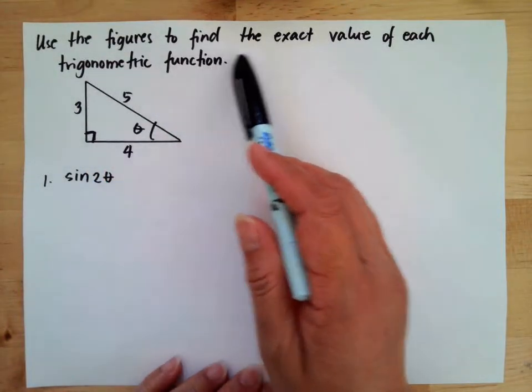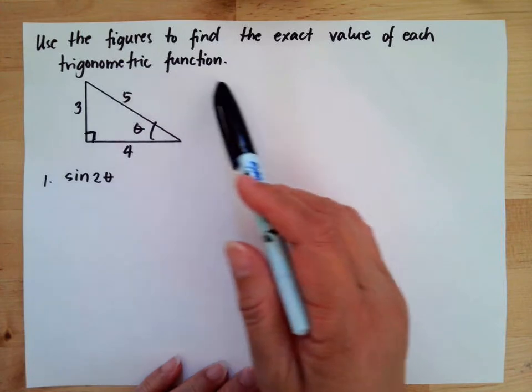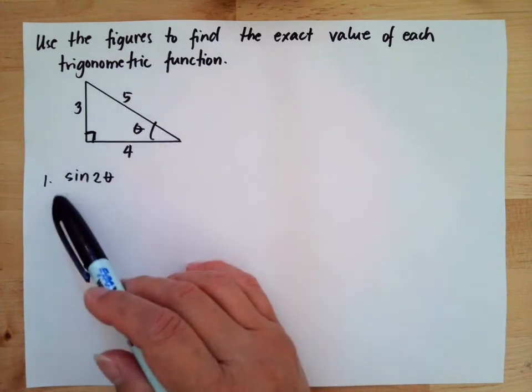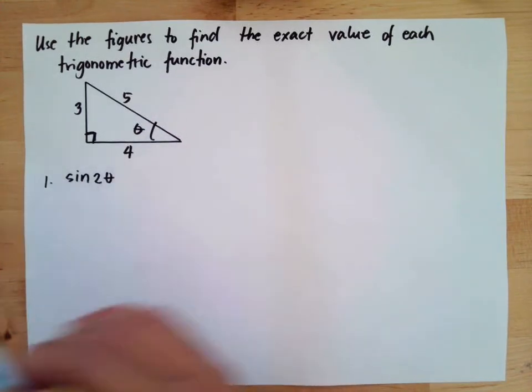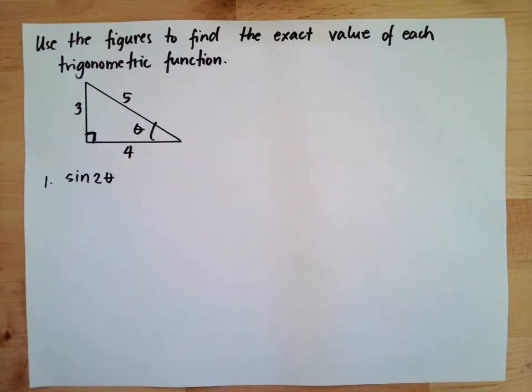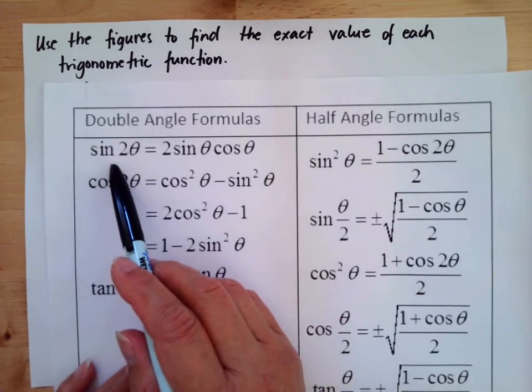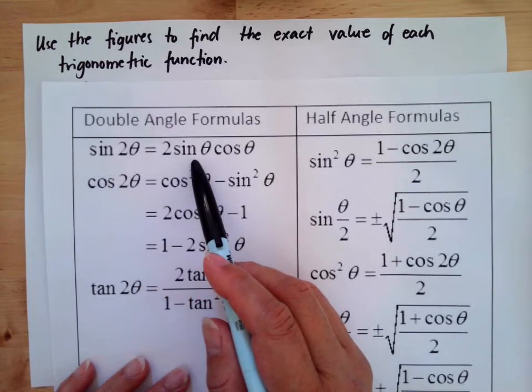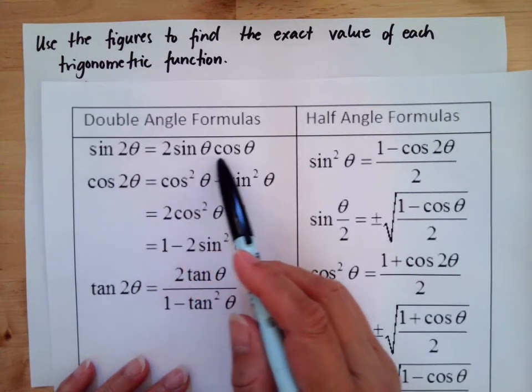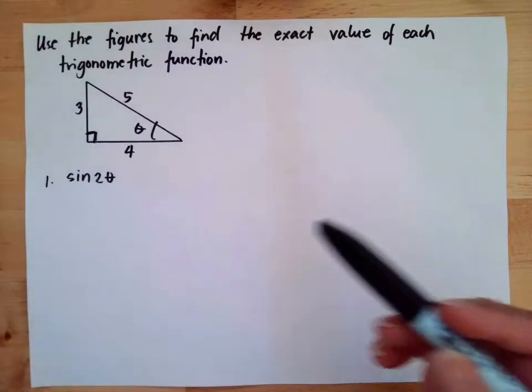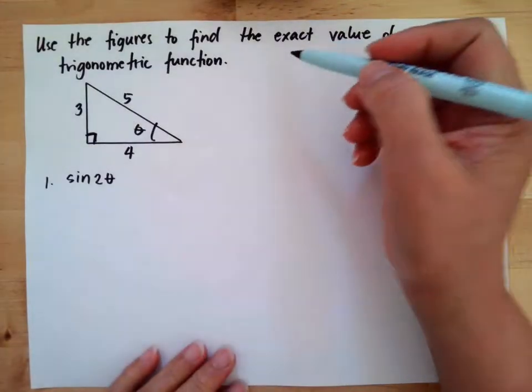Use the figures to find the exact value of the trigonometric function. Now we need to find sine 2 theta. To solve the equivalent of sine 2 theta, we use the double angle formula, which is equal to 2 sine theta cosine theta. We'll take note of our formula for the identities we're using.